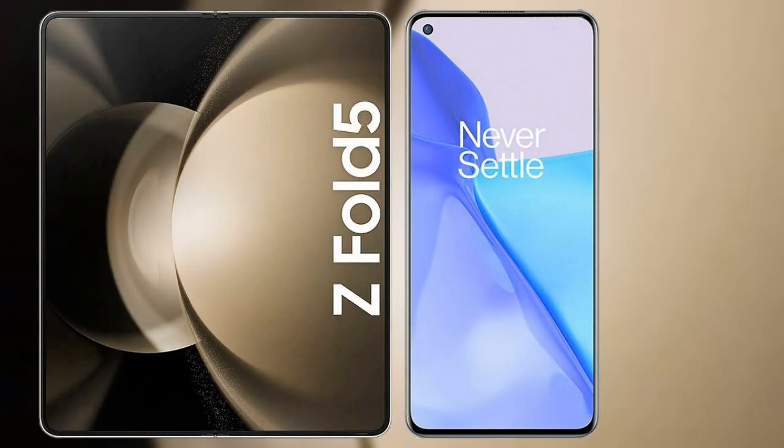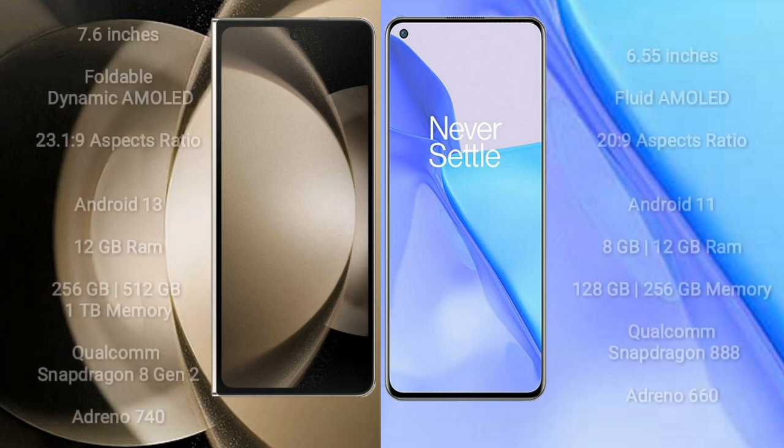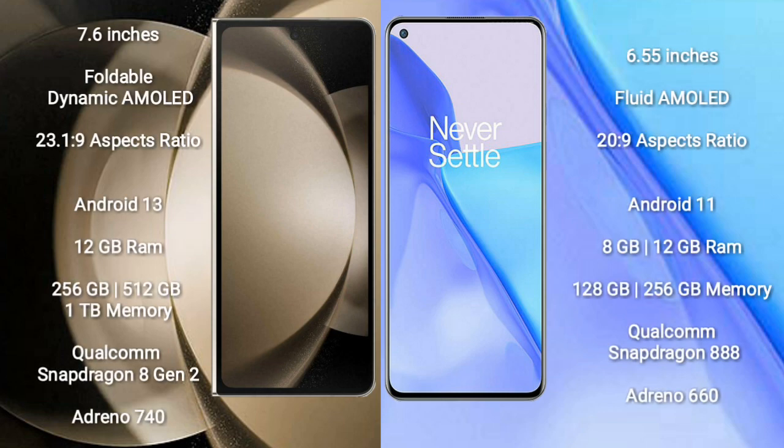I will compare the new Samsung Galaxy Z Fold 5 with OnePlus 9. Samsung Galaxy Z Fold 5 comes with a 7.6-inch foldable dynamic AMOLED display. OnePlus 9 comes with a 6.55-inch flat AMOLED display.